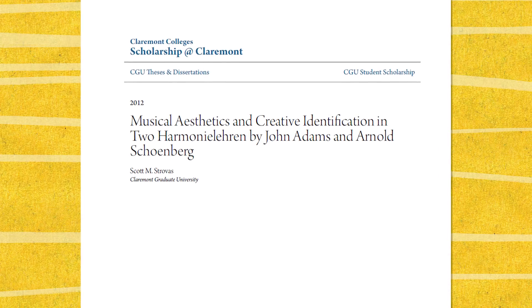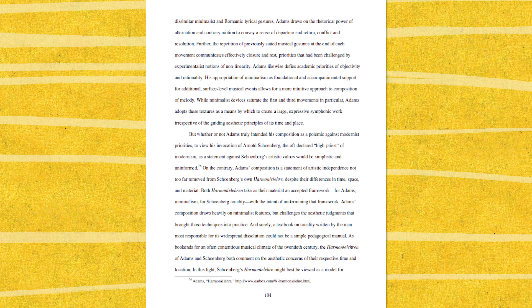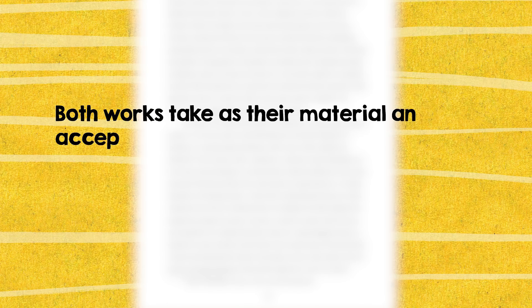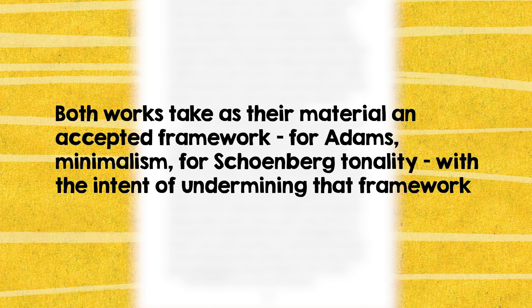But if anything, I'm drawn to the arguments Scott Strovas makes in his paper on the two different Harmonielehres, where he suggests that to conclude that Adams's work is a statement about tonality would be over-simplistic. Instead, Strovas argues, Adams recognized in Schoenberg's work an overall artistic approach — a kindred rebellious spirit, someone who won't listen to a rule just because it's well-established. Both works take as their material an accepted framework — for Adams, minimalism; for Schoenberg, tonality — with the intent of undermining that framework. And above all, Harmonielehre was a statement of intent for Adams: that he was ready to take on aesthetic challenges, whether from his immediate contemporaries or from further in the past.